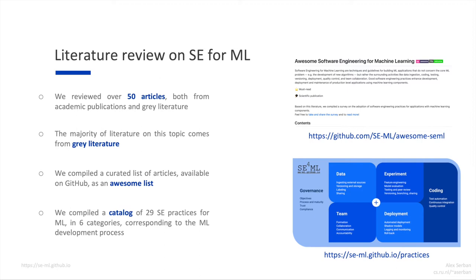From the articles reviewed, we compiled a catalog of 29 software engineering practices for machine learning, divided into six categories corresponding to the machine learning development process. As we can see in the picture on the right, the practices of coding, deployment, and team are similar to those for classical software development. However, practices that fall in the category of data or experiment are specific to the data science or machine learning development life cycle. Moreover, we have a category called governance, which is specific to defining overall objectives, assessing the process and maturity, and tackling issues such as interpretability of models, trust, or auditability.